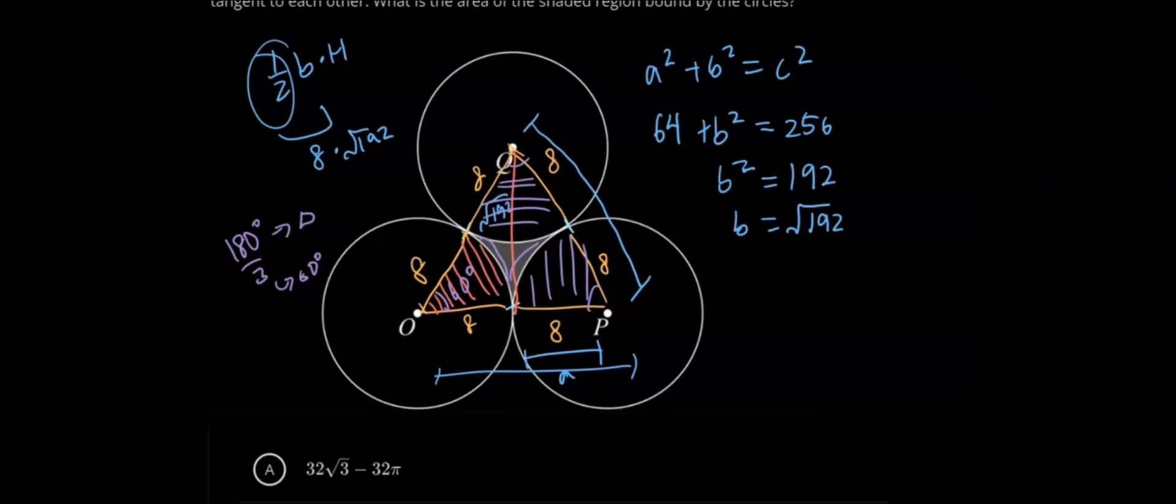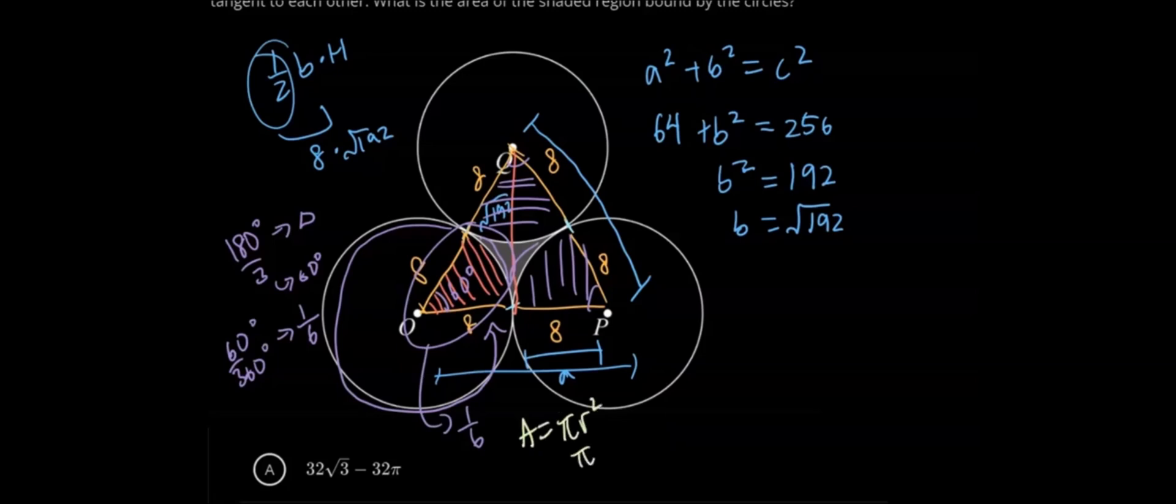Since we have 60 degrees, and we have 360 degrees in an entire circle, that means 60 over 360 means we have one-sixth of our full circle represented here. The area of a circle equals pi r squared. In this case, it would be pi times 8 squared, which equals 64 pi. To find the area of this region, we multiply 64 pi by one-sixth. But we have three of them, and they're all the same because they're all the same portion and all congruent circles with the same radius.